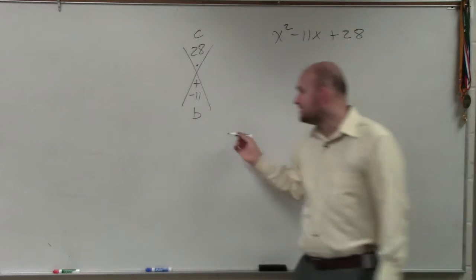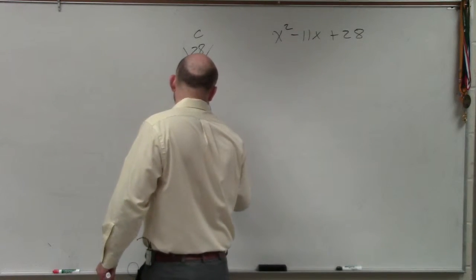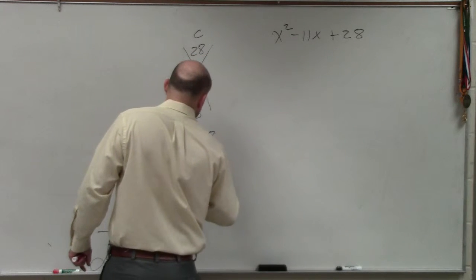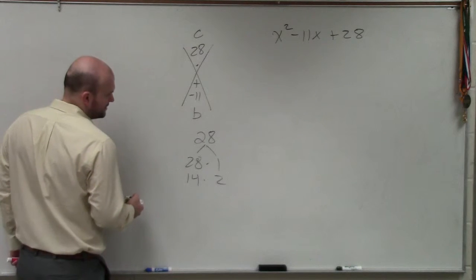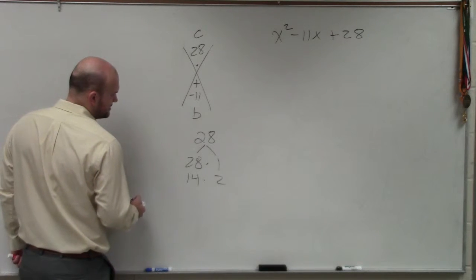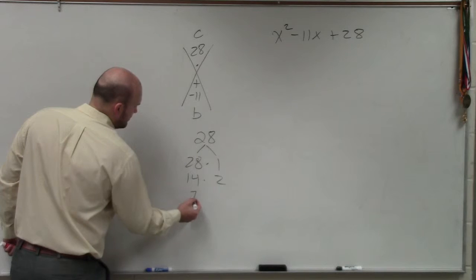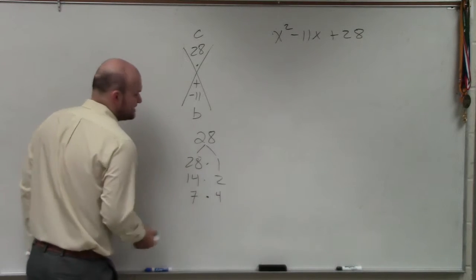So in my head, I'm thinking of all the numbers that multiply to give me positive 28. 28 times 1, 14 times 2. And we could do, 3 doesn't go in there, 7. 7 times 4, and that's it, right?